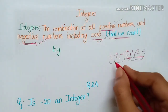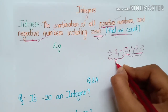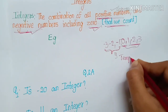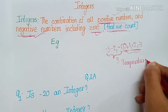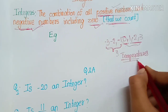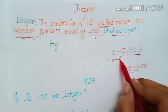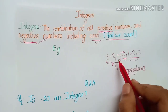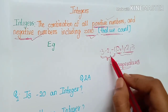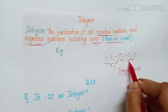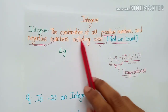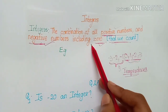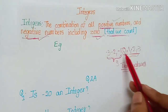Negative numbers are used when we count temperatures. For example, minus one degree Celsius, minus ten degree Celsius. So these negative numbers are also used to count, and that is why they are called integers — the combination of all positive numbers and negative numbers including zero that we count.